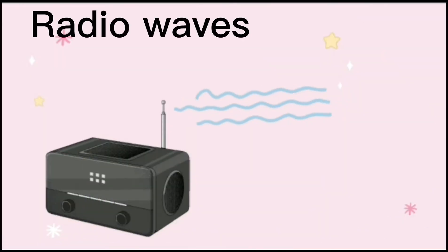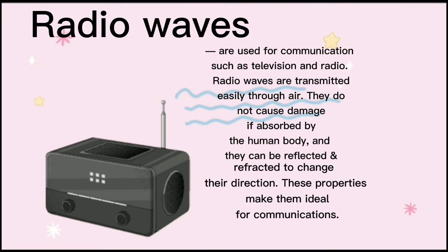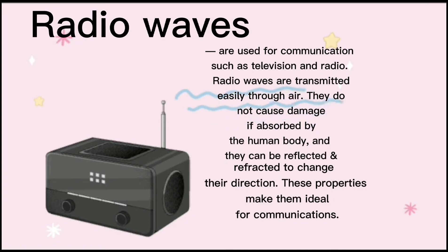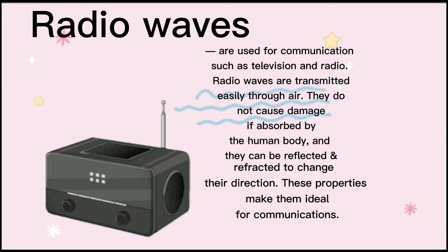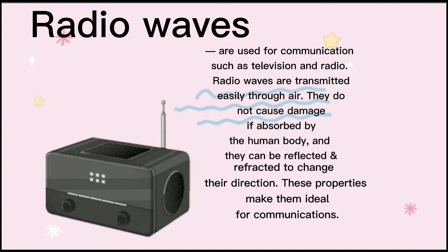Radio waves are used for communication such as television and radio. Radio waves are transmitted easily through air. They do not cause damage if absorbed by the human body, and they can be reflected and refracted to change their direction. These properties make them ideal for communications.